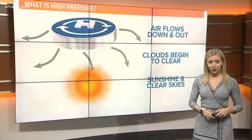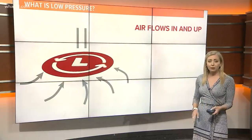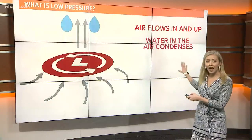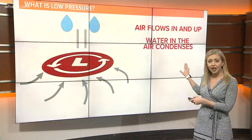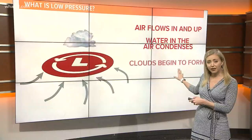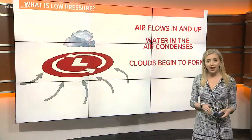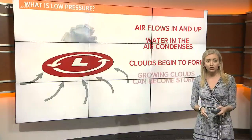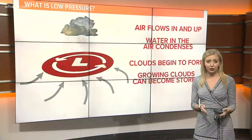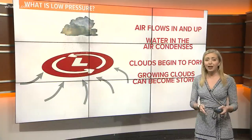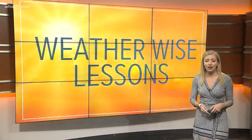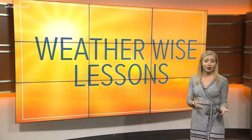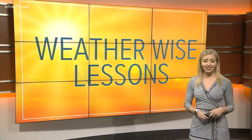Now over to low pressure systems — air flows in and up into the center, and available water in the air begins to condense. As it condenses, clouds form, and if the clouds are given enough time and enough moisture, they can grow big enough to produce some storms. So I hope that helps you understand how our weather maps and in turn our forecast work a little bit easier.